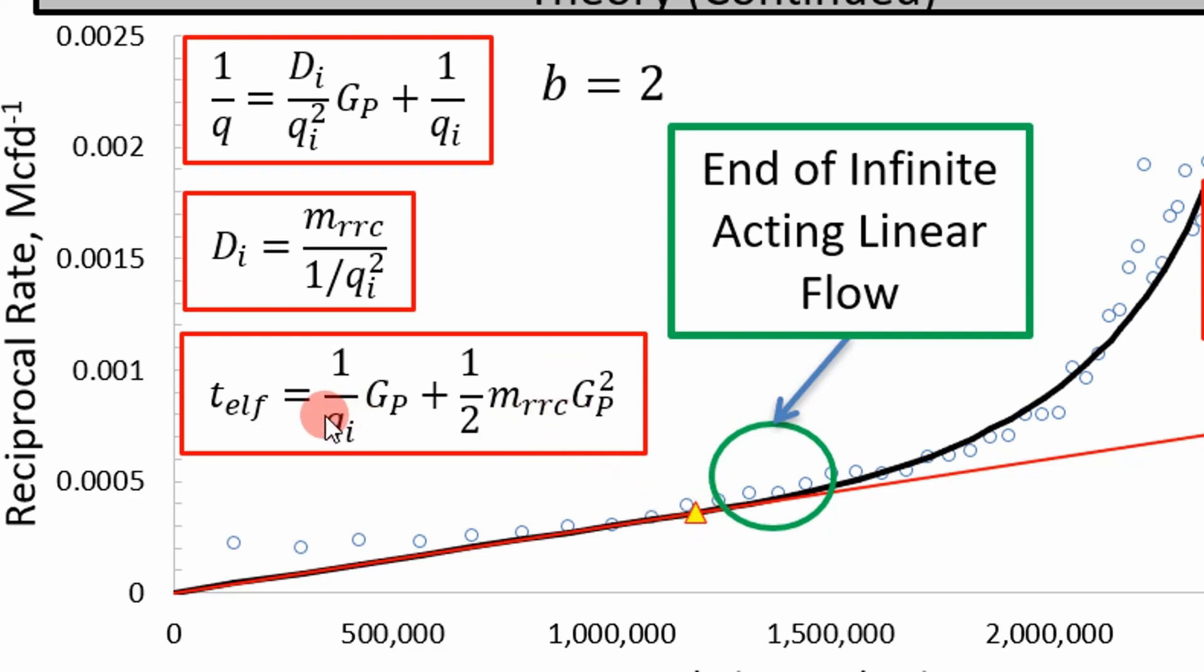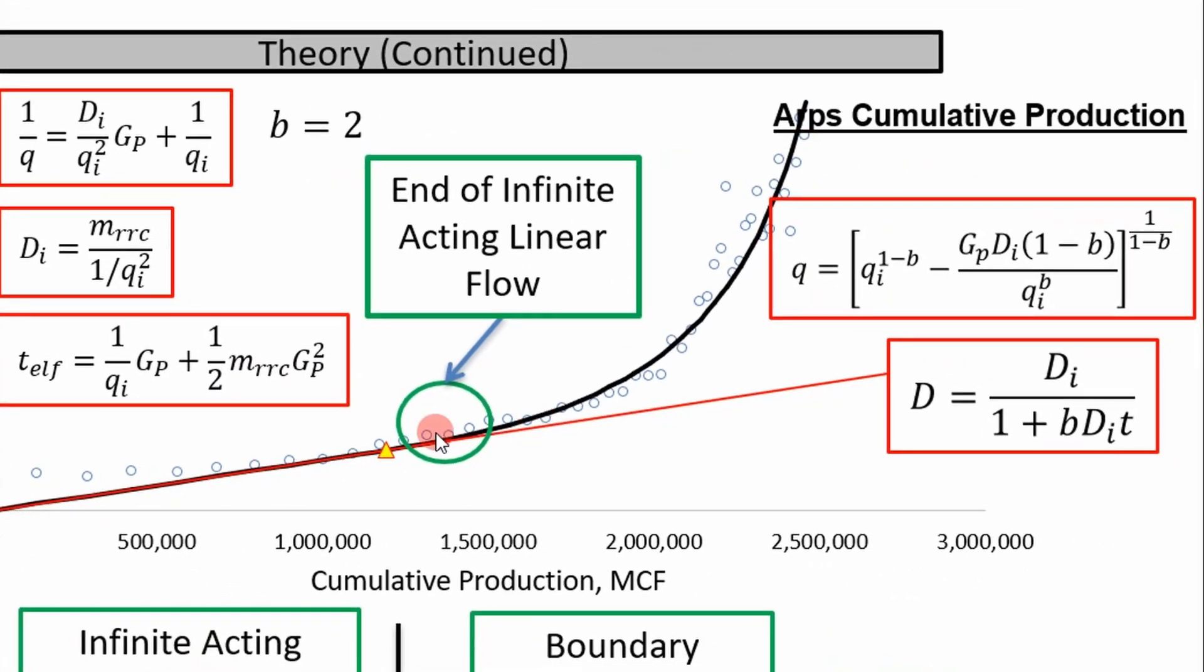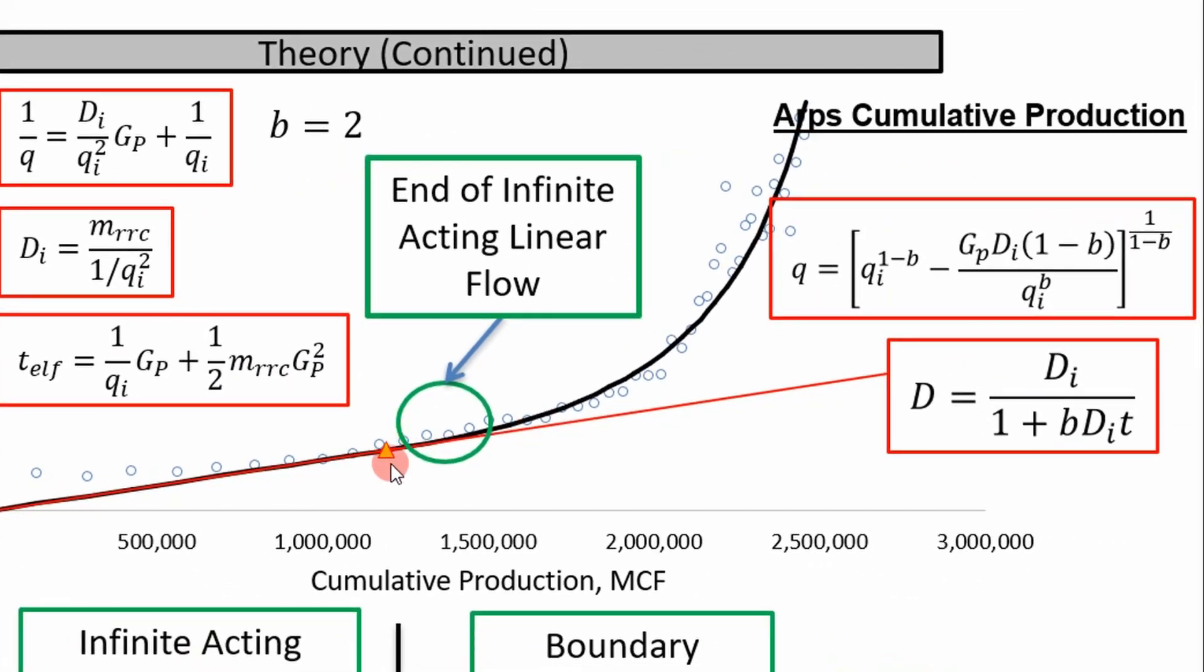And so you can derive this, this is important for forecasting. And so you're going to need this equation also. And then after this time to end of linear flow right here, you're going to fit this remaining data with ARPS cumulative production equation right here. And so you're going to need a couple of equations to do that. So we'll go into more detail on that in the Excel analysis.